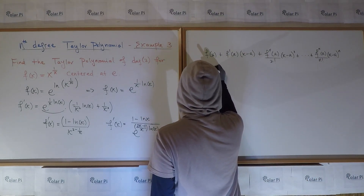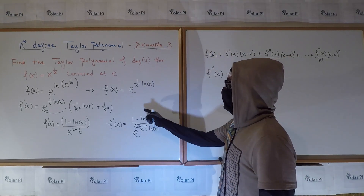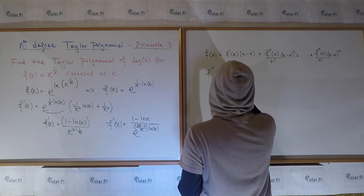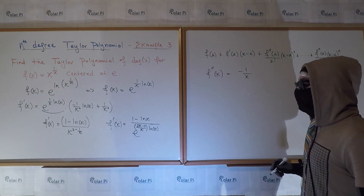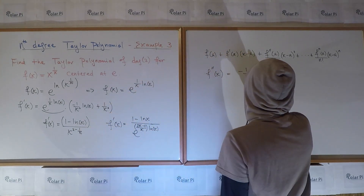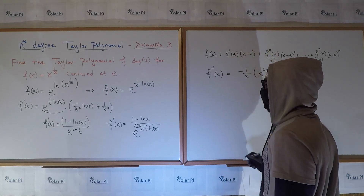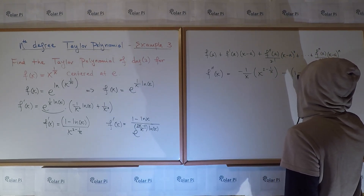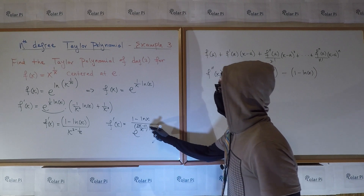The second derivative is obviously the derivative of the first derivative. This time we need to use the quotient rule. The derivative of the top: 1 goes away, and then minus 1 over x for negative ln of x. So we have minus 1 over x, times the bottom. Remember, the bottom is just x to the 2 minus 1 over x. And then minus the top, which is 1 minus ln of x, times the derivative of the bottom.